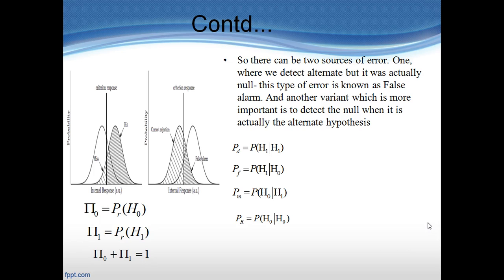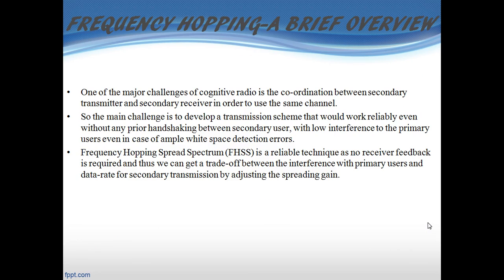Type 1 error, that is the error of misdetection, is more important for the efficient working of the energy detector, but type 2 error also has to be minimized. The main objective of cognitive radio is dynamic spectrum access, thereby reducing the problem of spectrum scarcity and enhancing spectrum efficiency. One of the major challenges is coordination between the secondary transmitter and the secondary receiver to use the same channel. The MAC layer protocol is an alternative approach which relies on prior handshaking and white space knowledge sharing.